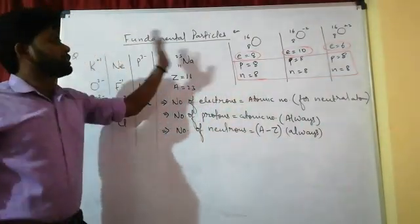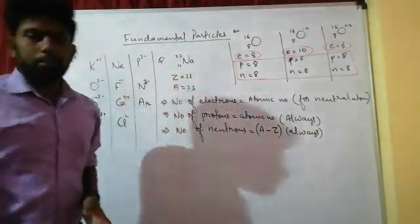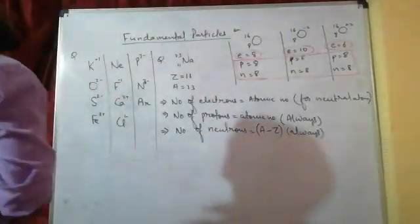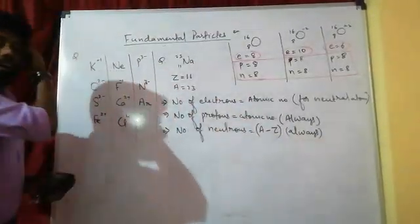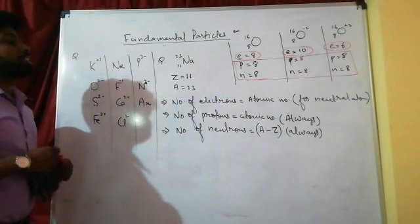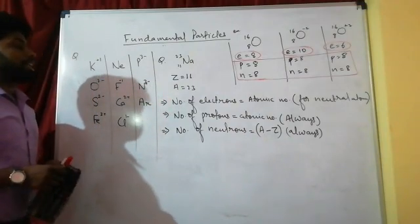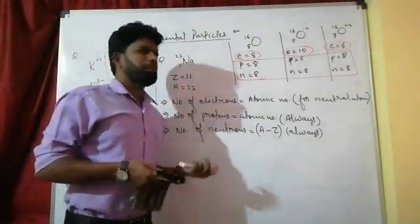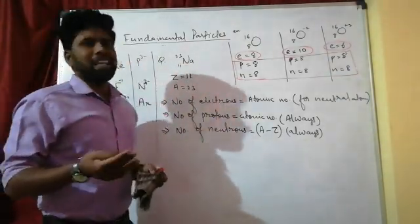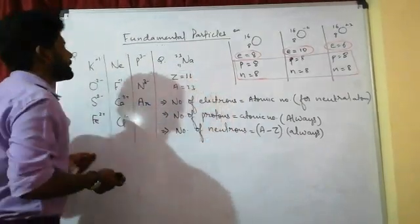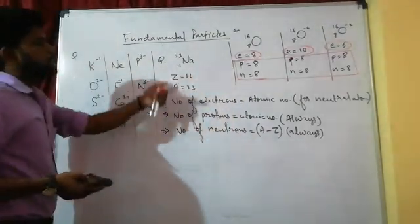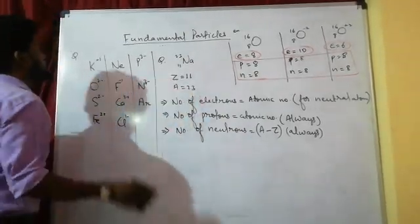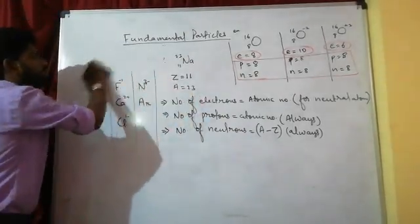Last class we covered fundamental particles and studied elements. We looked at atomic numbers 1 to 30, with calculations of atomic number, number of electrons, protons, and neutrons. These are basic things from 8th, 9th, and 10th class — but if you don't know, make sure to see that video. These are the basics of chemistry.